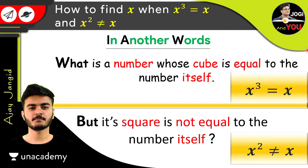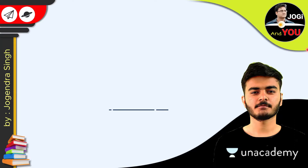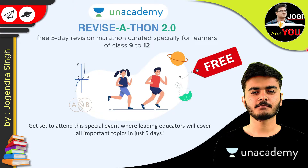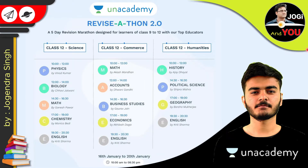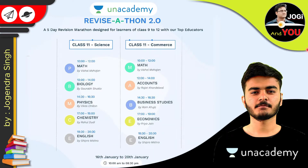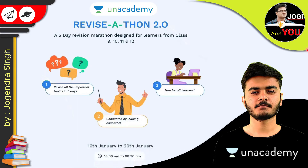So x square cannot be equal to x. By the way, exams are coming and this time Unacademy is back with Revisathon 2.0, which is even bigger than before. It is a 5-day event for learners of class 9 to 12 to revisit all important topics for final and board exams, from 16th to 20th of January. This is an absolutely free event, open for all. Just visit the landing page to enroll — all links are given below in the description.